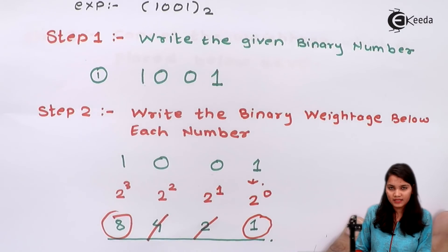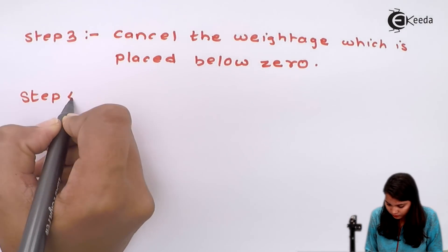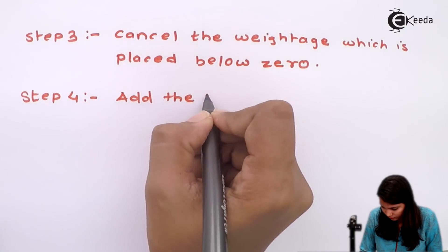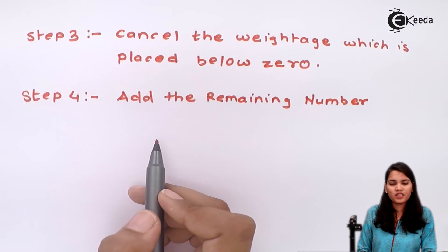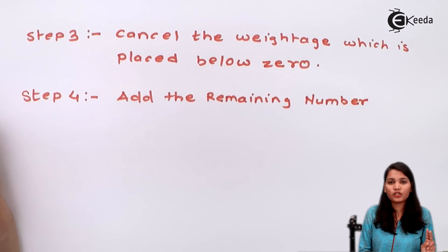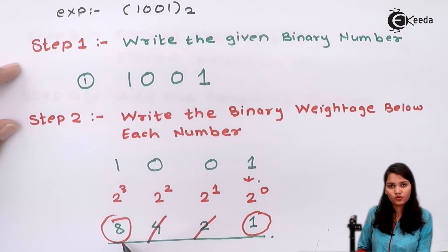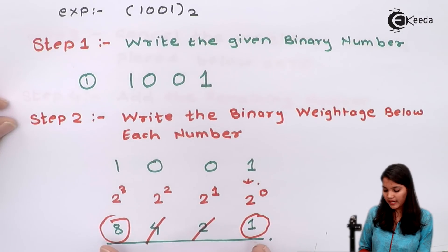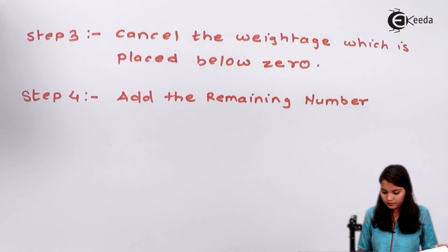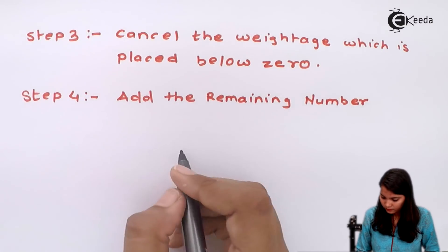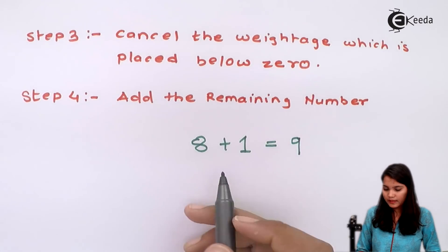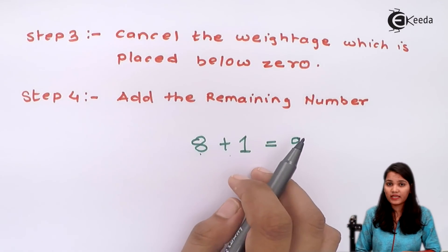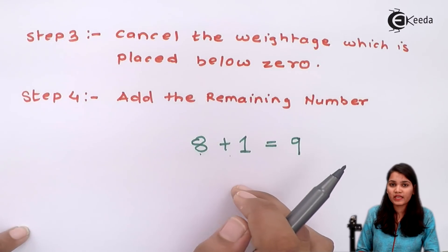Now let's see the last step. Step 4 is to add the remaining numbers. The two remaining numbers are 8 and 1. So we add them: 8 plus 1 gives 9. Therefore the decimal number for the given binary number is 9.